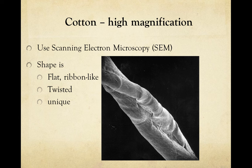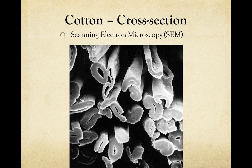Here is cotton under very high magnification using a SEM — a scanning electron microscope. You can see it has a really unique shape: it's flat, ribbon-like, and twisted. As shown in these images, it can be quite irregular. No two cotton fibers look quite the same, even though they do take the same general form — and that's important, and we'll come back to that later.